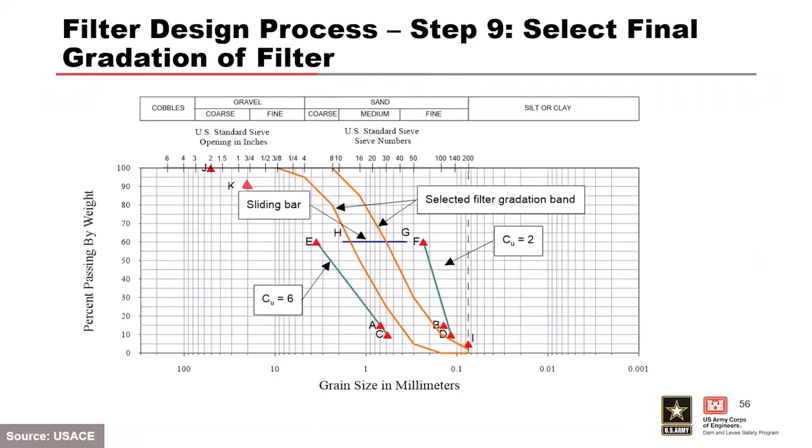Taking all 11 points and the sliding bar, you can see the band. The gradation curve in the center is ASTM C33 sand — concrete sand — with a slight adjustment for no more than 5% passing the No. 200 sieve. You want to select a material that's readily available.